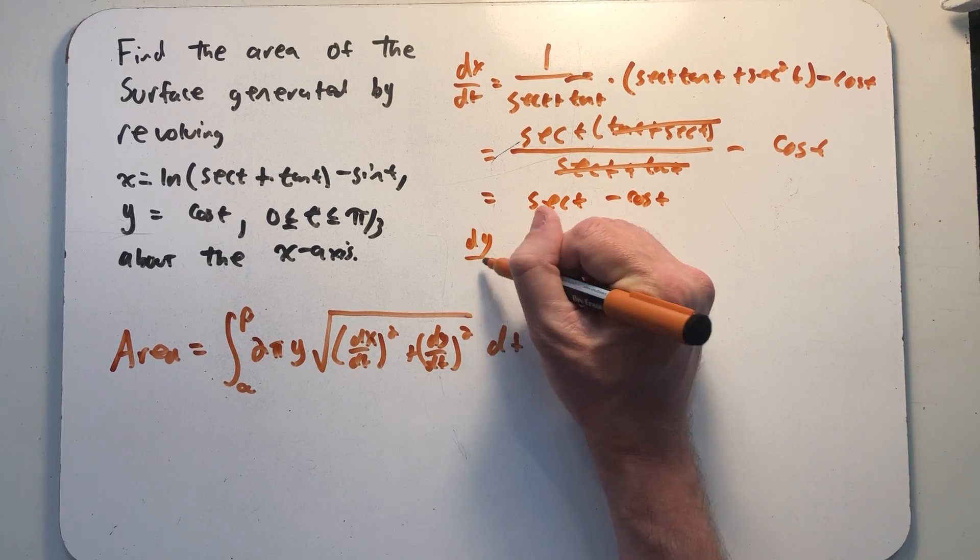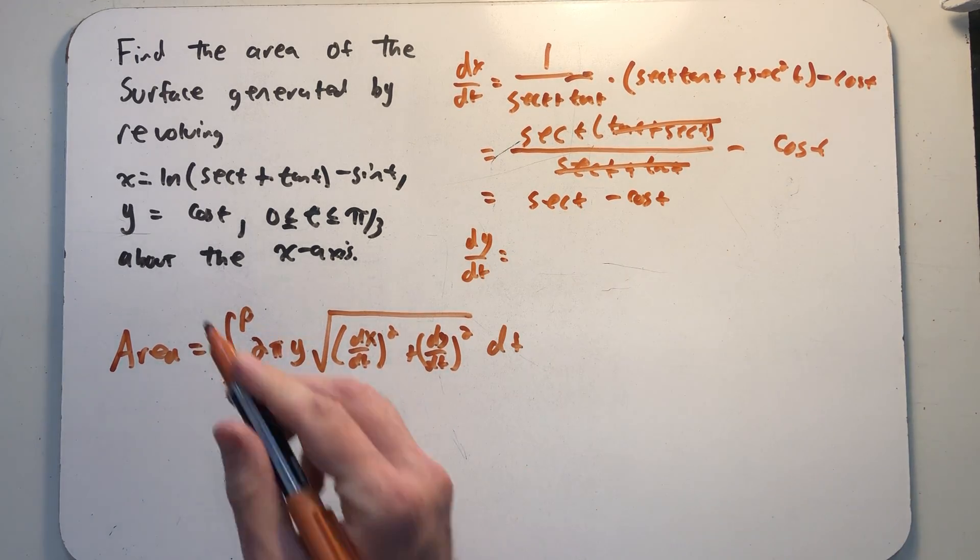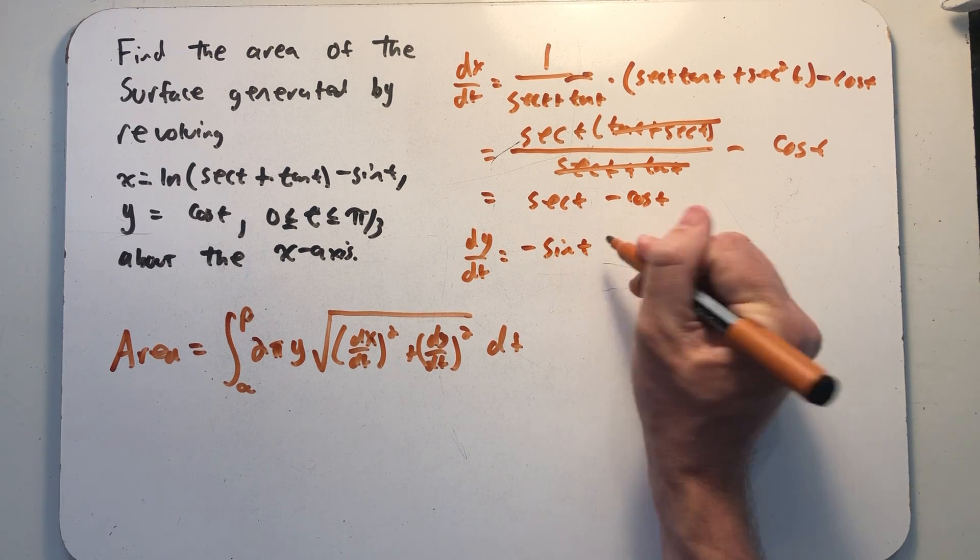dy/dt doesn't take nearly as much time to compute. Take the derivative of a cosine, and we get a minus sine.